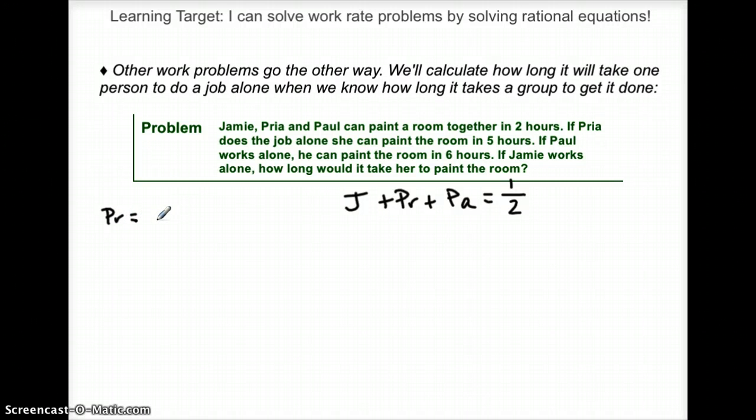They tell me that individually Priya's work rate is she can paint a room, so 1 over 5. She can do it by herself in 5 hours. Paul, if he works alone, he can paint a room, so 1 room in 6 hours.